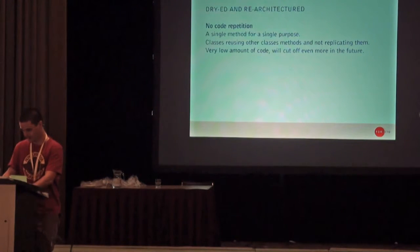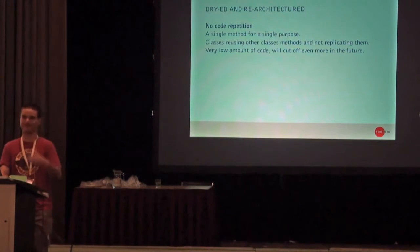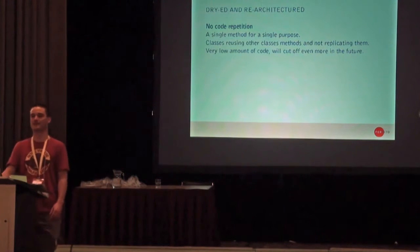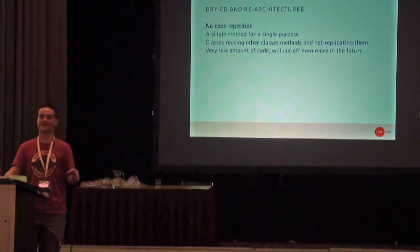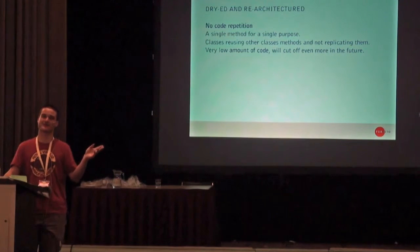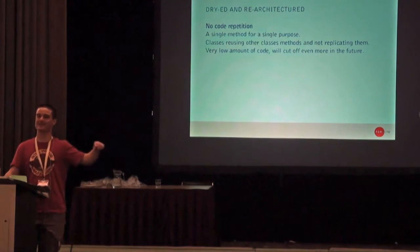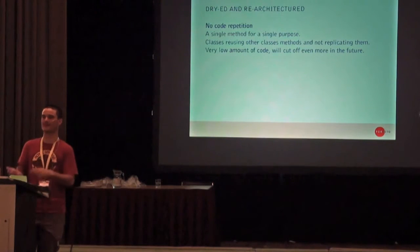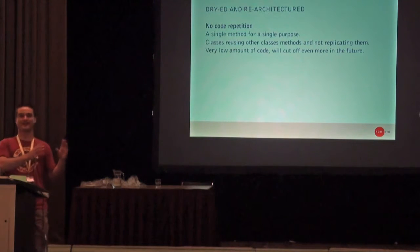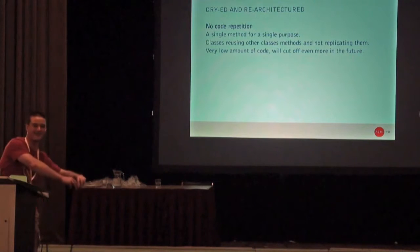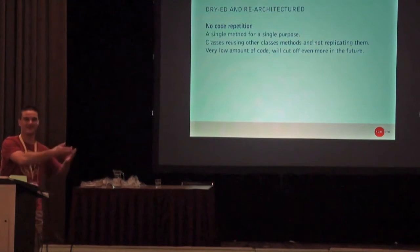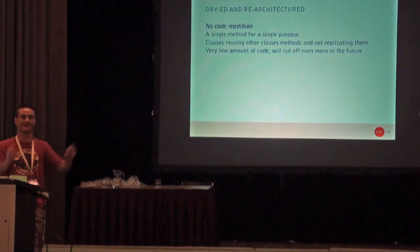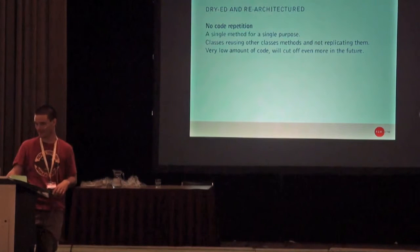Another change, less visible to the end user: the code was DRY'd and re-architectured. For instance, I found 17 get-user-groups queries or functions — even com_users has two or three queries doing the same thing, just manipulating values differently afterward. I created one get-user-groups function and all classes call that with different parameters and get results. When you find a bug, you go to one function to fix it — you don't need to go to 10 or 15 places and change all those functions or queries.